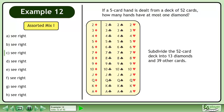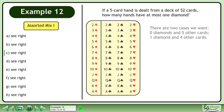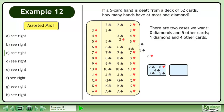Subdivide the 52 card deck into 13 diamonds and 39 other cards. There are two cases we want, 0 diamonds and 5 other cards, and 1 diamond and 4 other cards.